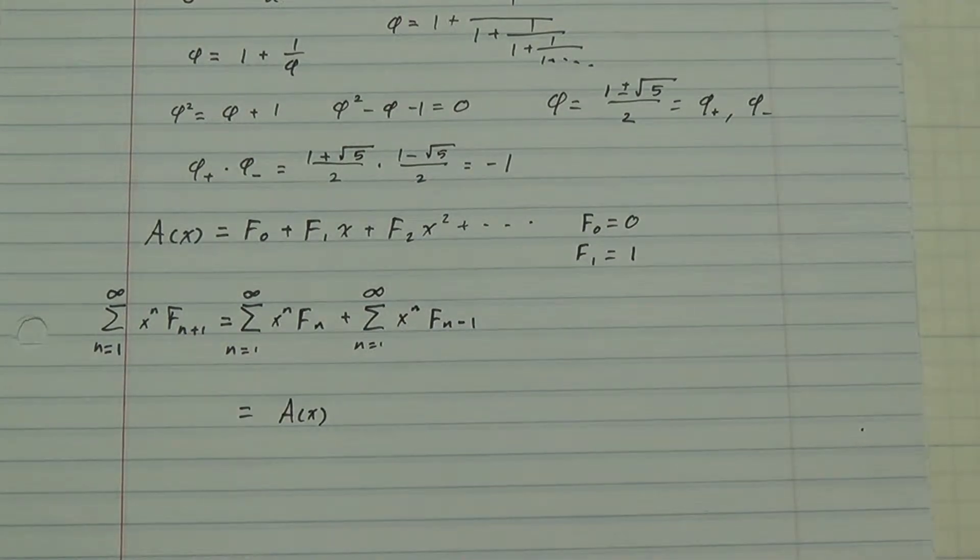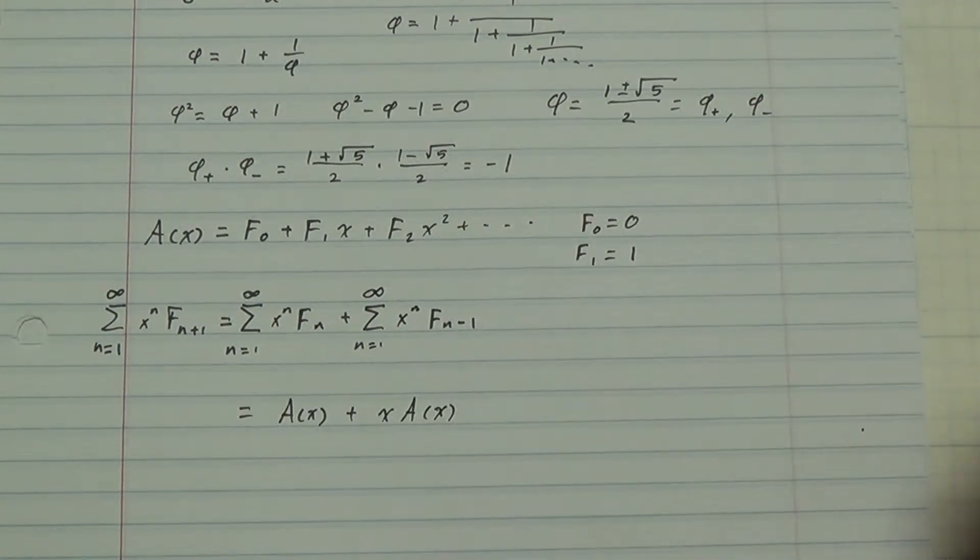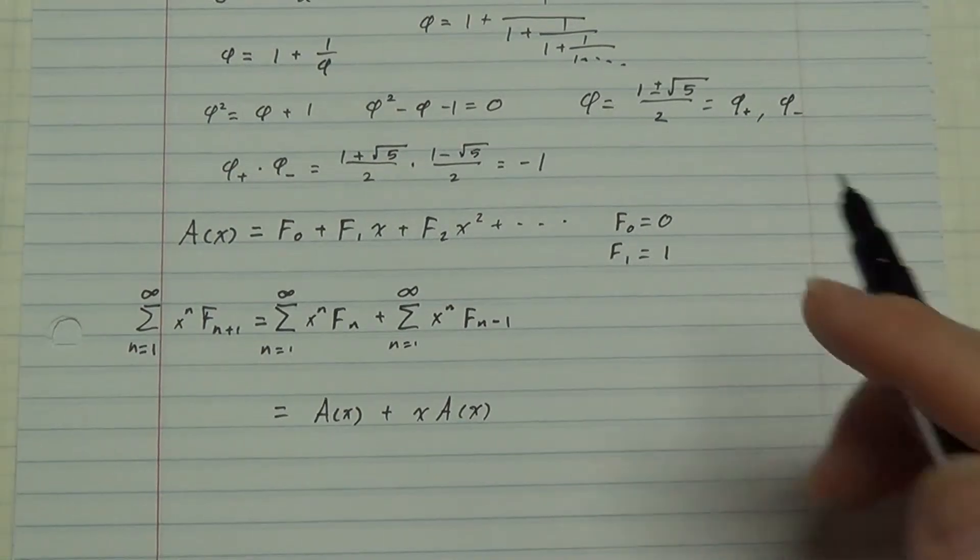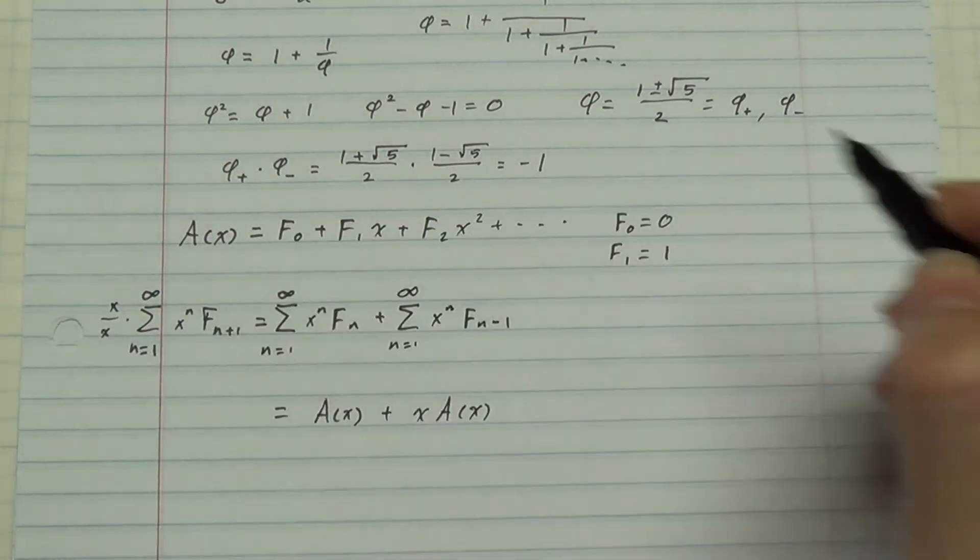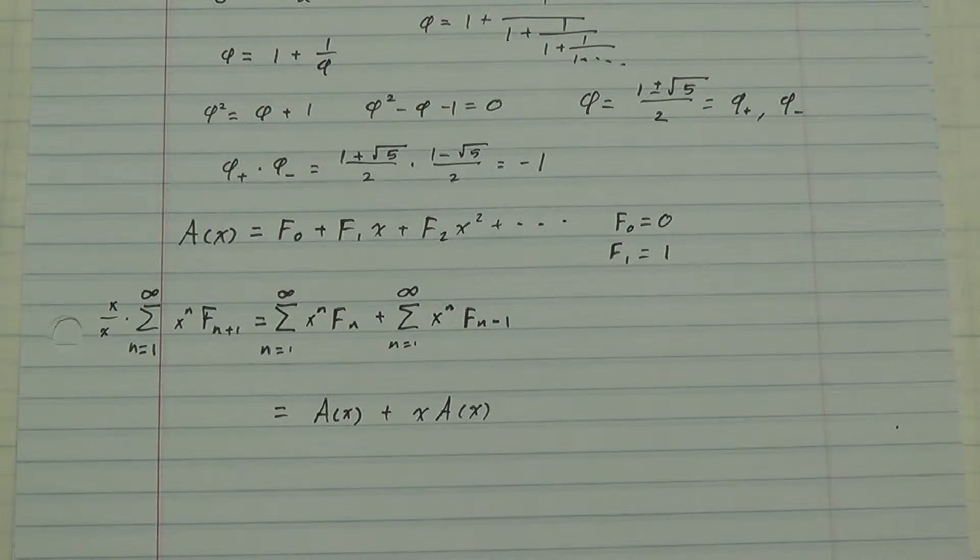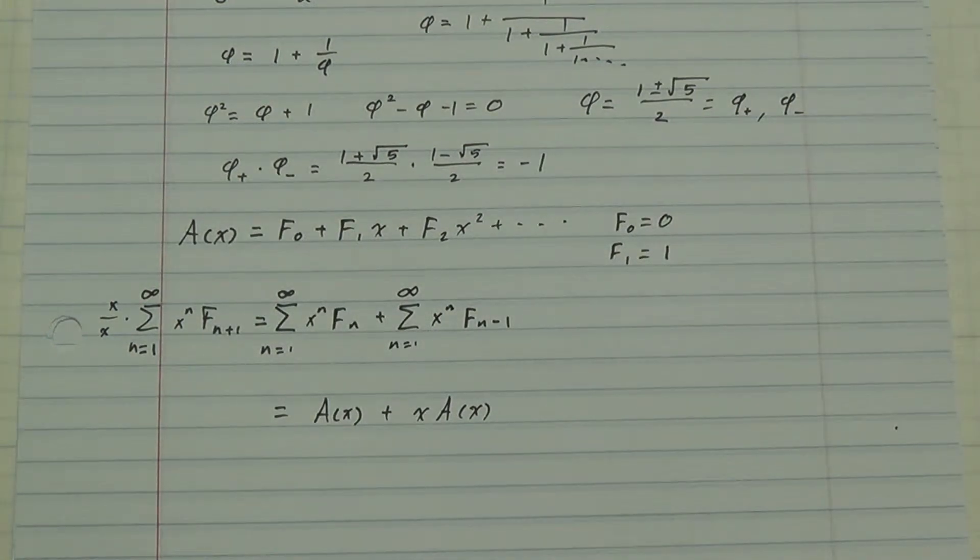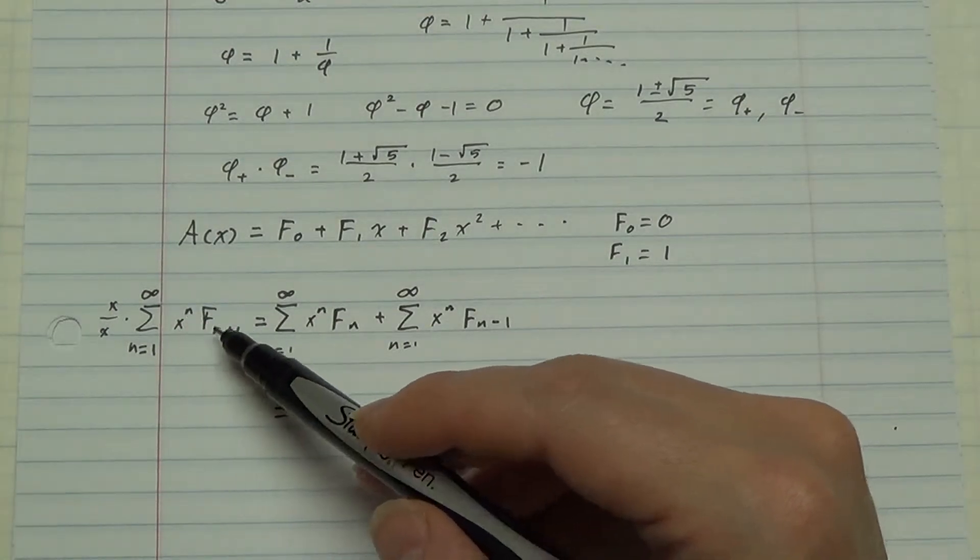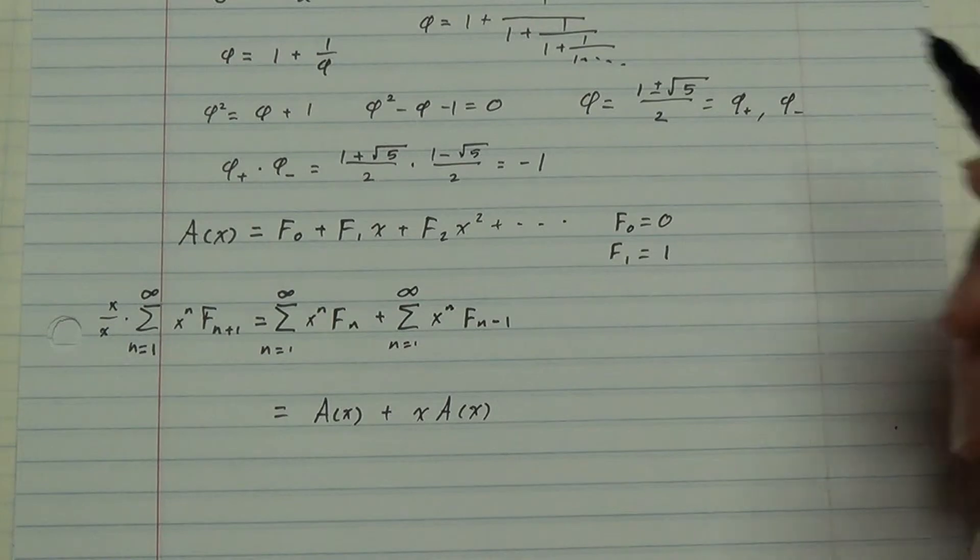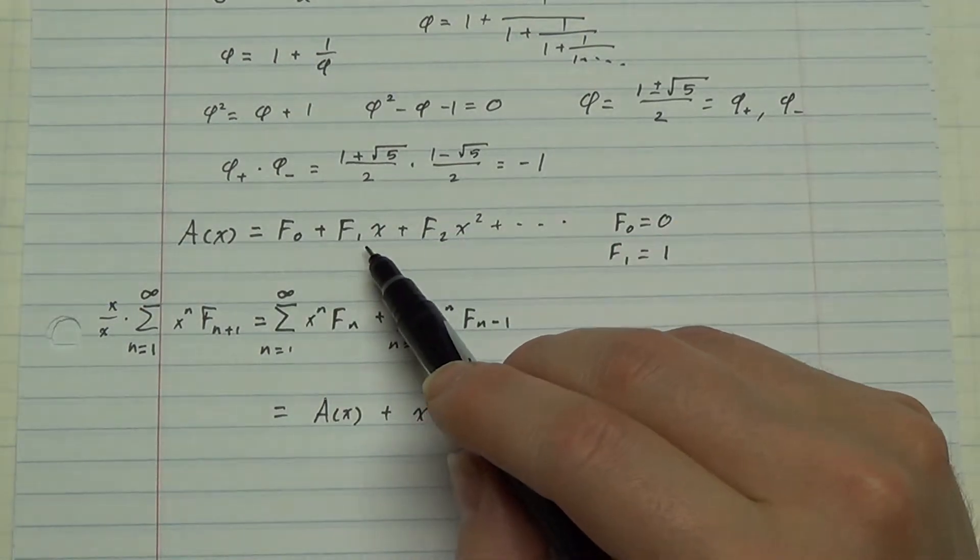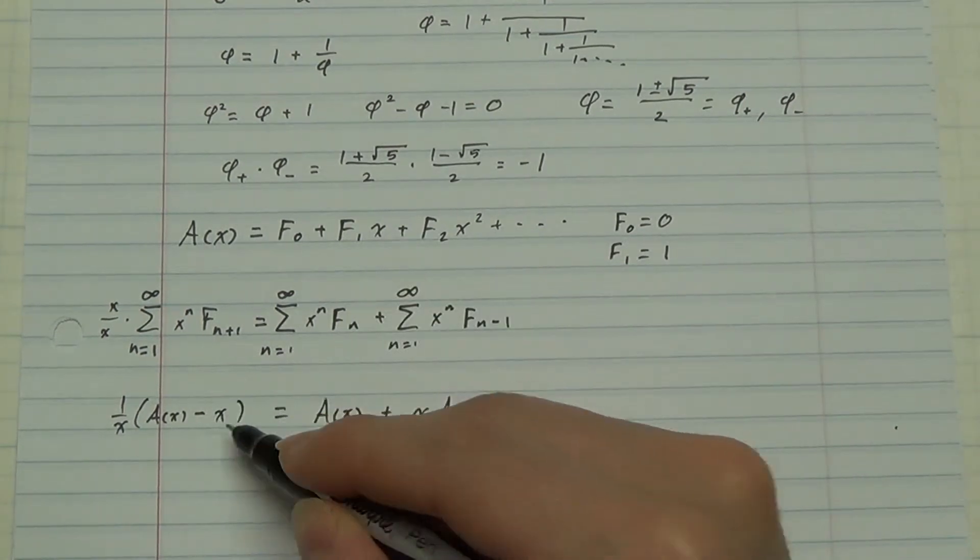And here, very close to the generating function, all we have to do is factor out one of these x's. On the left hand side, the situation is a little bit trickier. We can multiply by one in a sneaky way, multiply it by x over x, take the numerator inside, distribute it over the sum. And the x to the n becomes x to the n plus 1, matching up these indices. But then you start with x squared F2. So the left hand side will be the generating function with this first term subtracted off. So we get 1 over x times A minus x. There we go. Now we can solve for A.